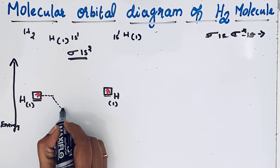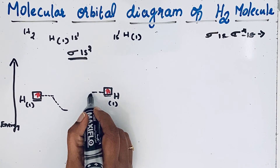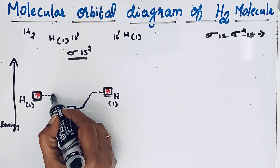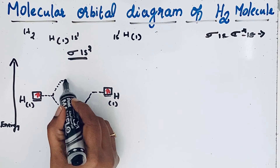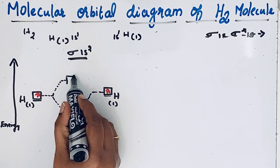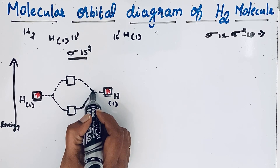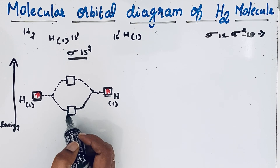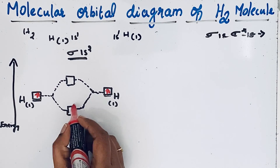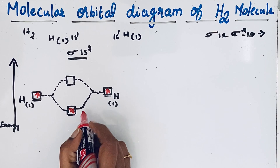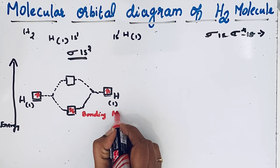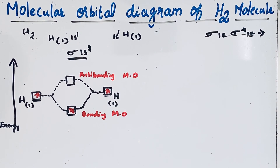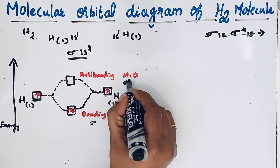Let us draw the low energy bonding molecular orbital and the high energy antibonding molecular orbital. Both should be aligned on the diagram. The two electrons enter into the low energy bonding molecular orbital, forming the sigma bonding molecular orbital. This bonding molecular orbital is represented as sigma and the antibonding molecular orbital is represented as sigma star.